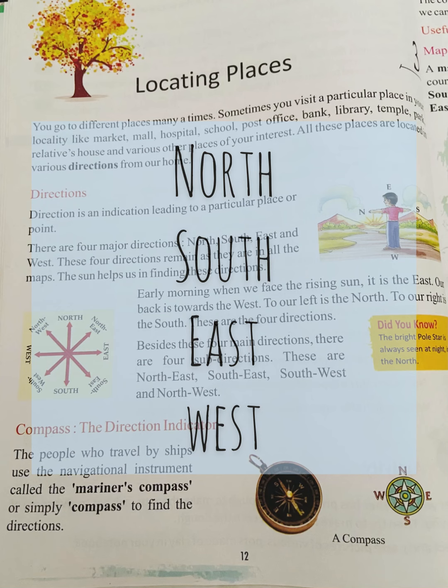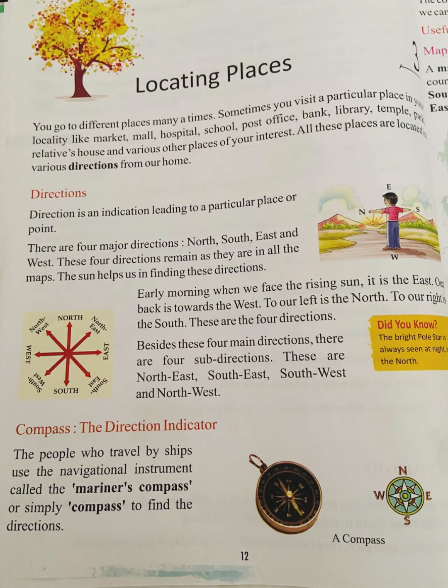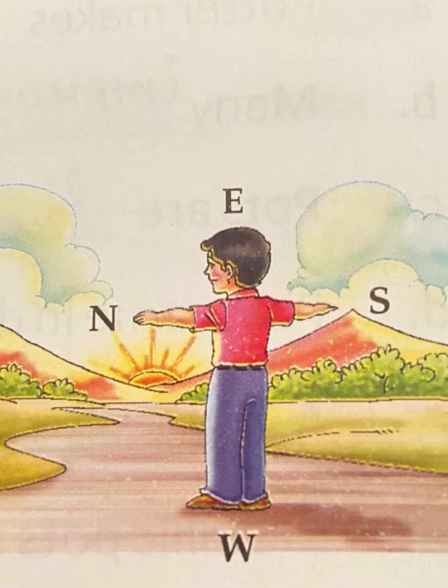To get to the right place we should know the direction. There are four major directions: North, South, East, and West. We locate these directions using the sun. We know that the sun rises in the East and sets in the West. So with the help of the sun, to the left is North and to the right is South. Can you see the image of the boy standing in your book? He is showing the four major directions through the sun.